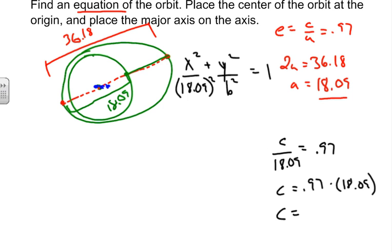So now we have our c value. Now we're looking for our b value so we can finish up our equation. From here to here, where the center is might be inside the Sun, might not be inside the Sun, this is not drawn to scale. But our c value is going to be 17.5473.